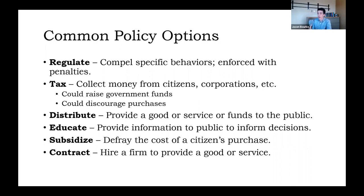The government could distribute or provide a good or service to the public. The government could also choose to educate the public to inform their decision-making — for example, on a pack of cigarettes there's a gigantic warning label that says this product is known to cause cancer. If the government wants to encourage people to buy something, it could subsidize the cost: with hybrid or electric cars, people can get tax incentives to buy those cars. And if there's a good or service the government doesn't provide, they could contract with a private or nonprofit organization that does provide those services.